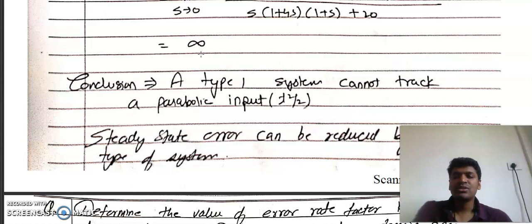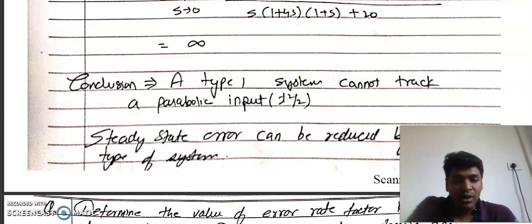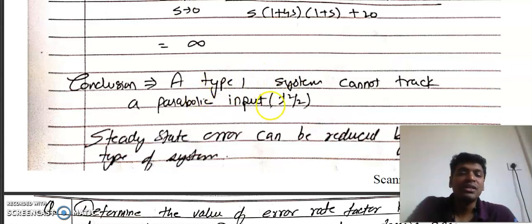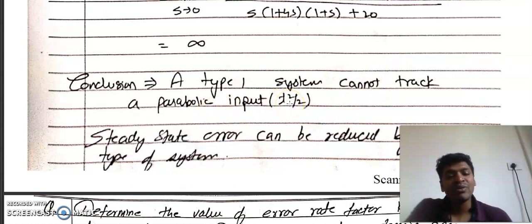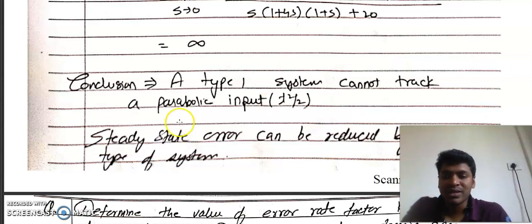The reason it is not accurate is due to the parabolic signal t²/2. A Type 1 system cannot track a parabolic input t²/2. If you give a parabolic input to a Type 1 system, the output will not be accurate at all. Hence, a Type 1 system with parabolic input is essentially a useless system.